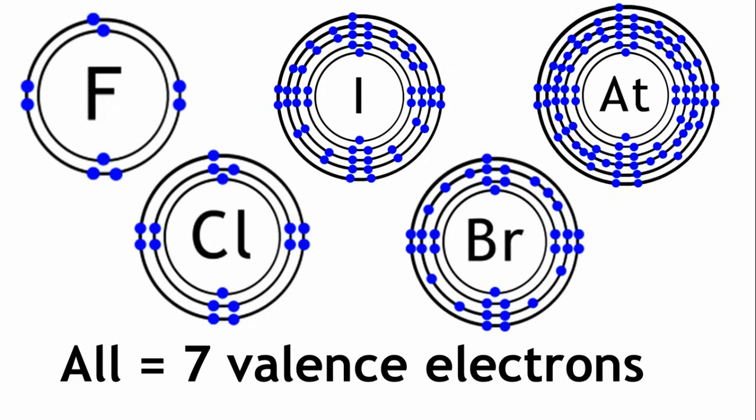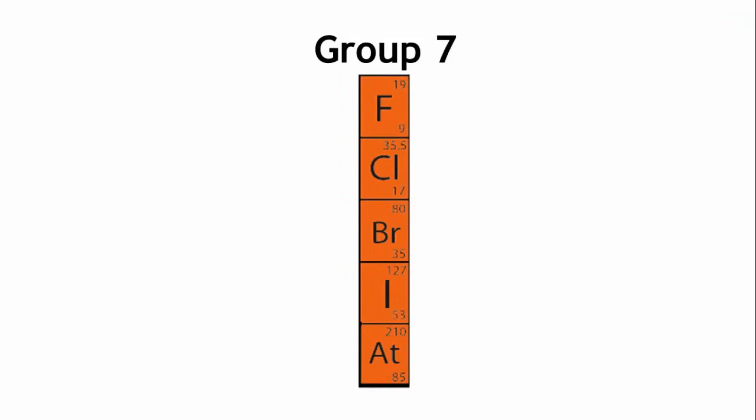The properties show a gradual change going down the group, as we go from period to period. So, if we look at group 7 again, we can see that they are each in a different period in the periodic table, telling us that each element in this group has its outer electrons on a different shell.